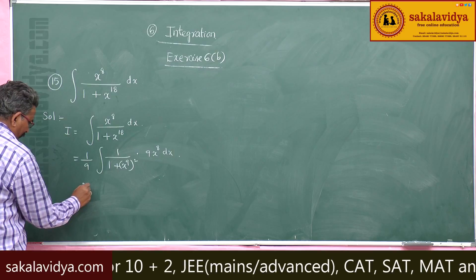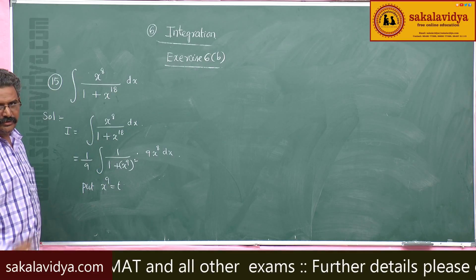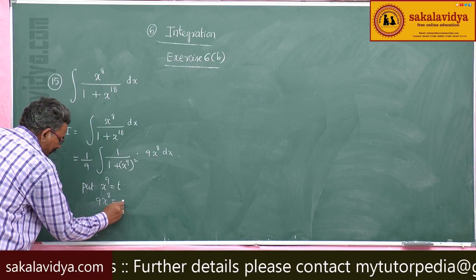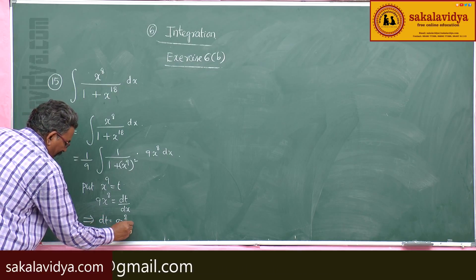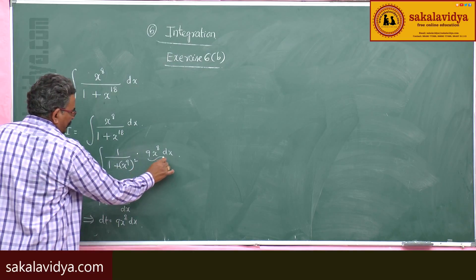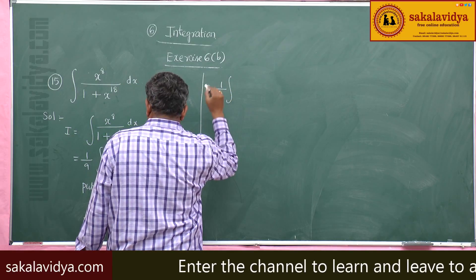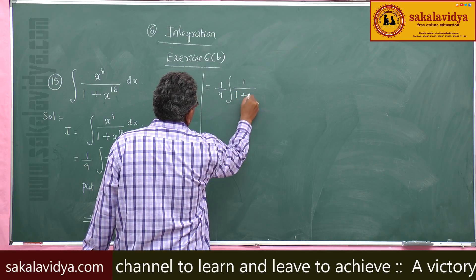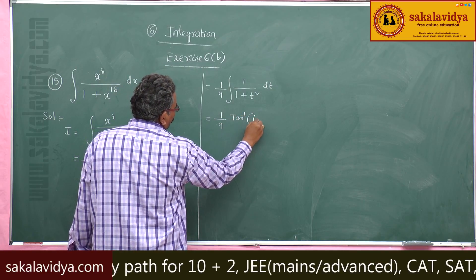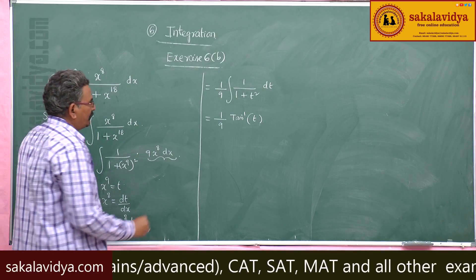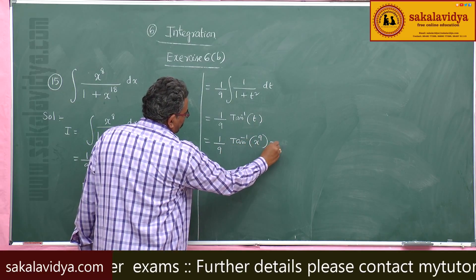Now put x to the power of 9 equal to t. Differentiating both sides with respect to x, 9x to the power of 8 equals dt by dx, so dt equals 9x to the power of 8 dx. Substituting, this becomes 1 by 9 times integral of 1 by 1 plus t squared dt, which equals 1 by 9 tan inverse t. Since t is x to the power of 9, the answer is 1 by 9 tan inverse of x to the power of 9 plus constant of integration.